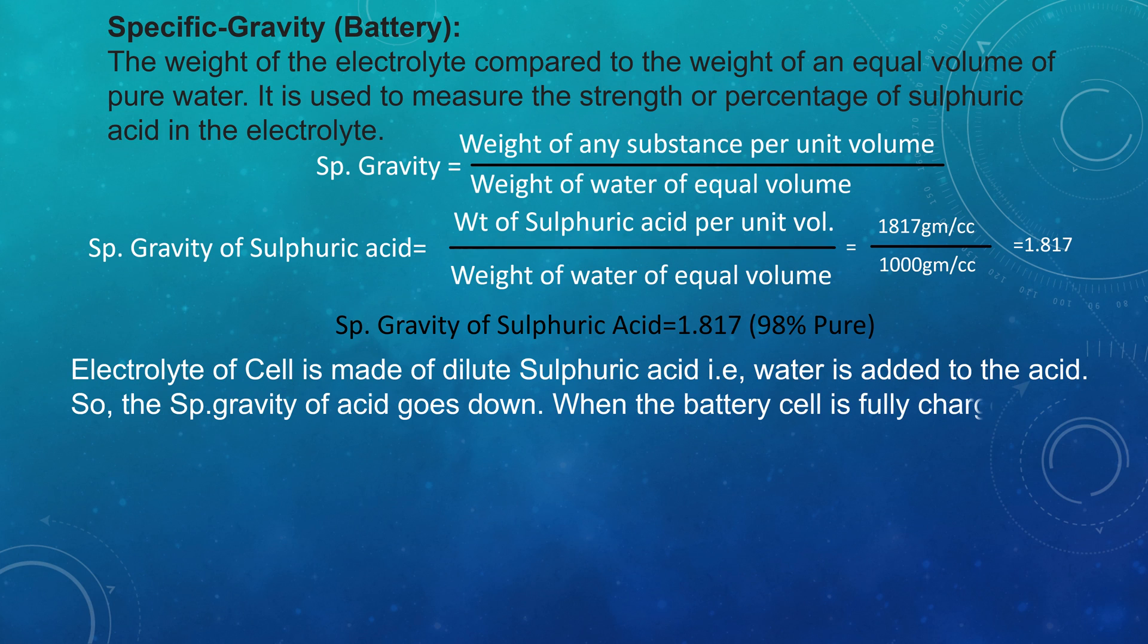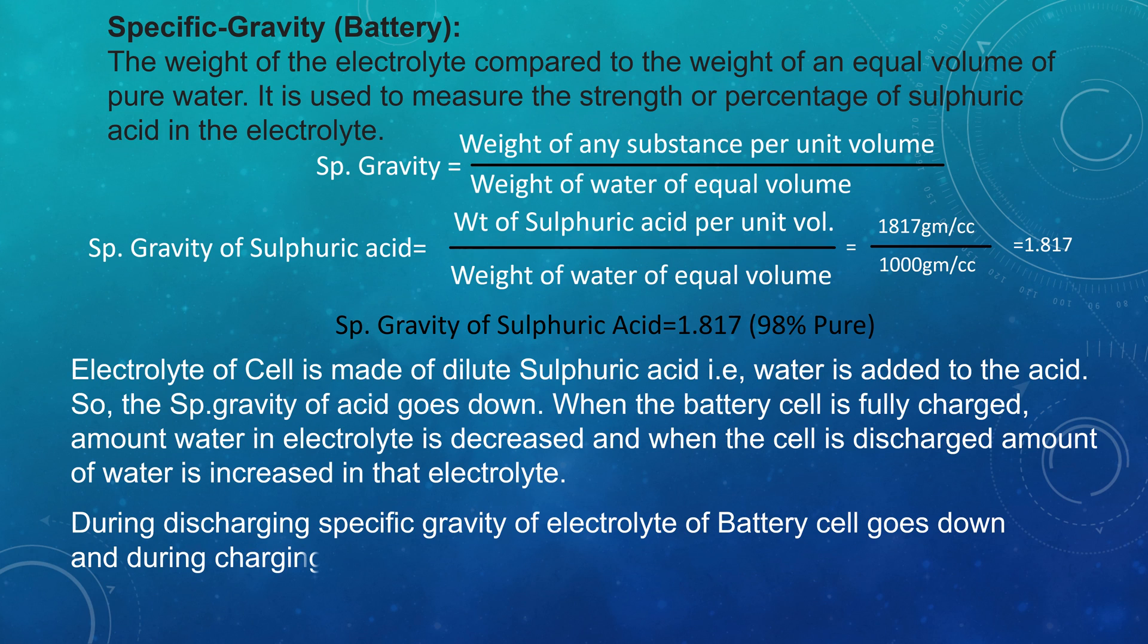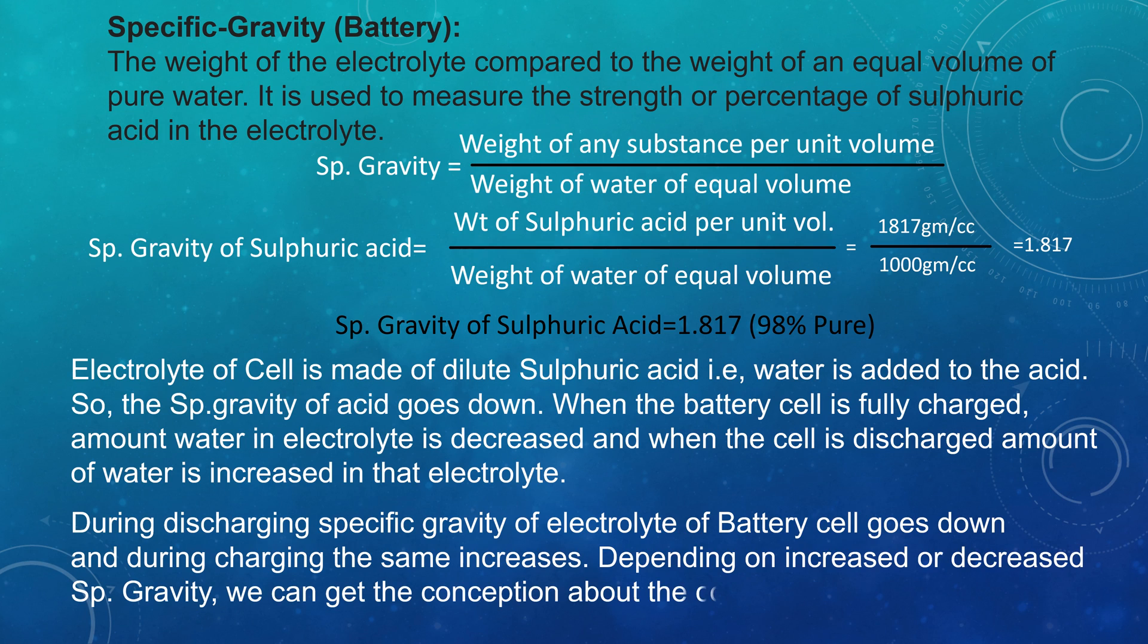When battery is fully charged, amount of water in electrolyte is decreased. And when the cell is discharged, amount of water increases in that electrolyte. During discharging, specific gravity of electrolyte of battery cell goes down. And during charging, the same increases. Depending on increased or decreased specific gravity, we can get the conception about the condition of the battery cell.